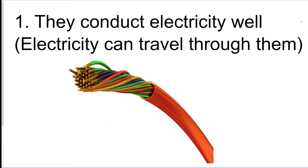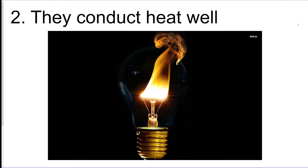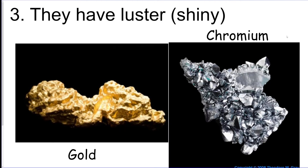So we're going to start with metals. Metals conduct electricity very, very well, so we use them in a lot of wires and technology. They get very hot — they conduct heat very well. They have luster, which sort of looks like a shine to them. That's what luster means.